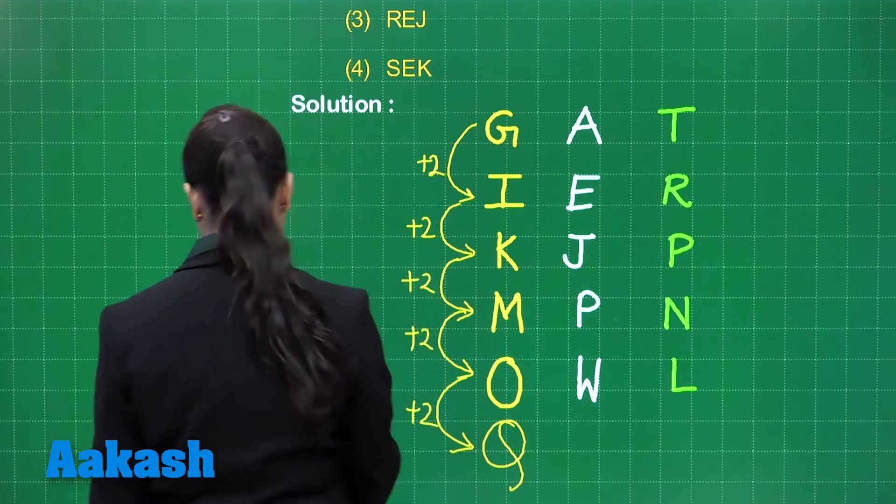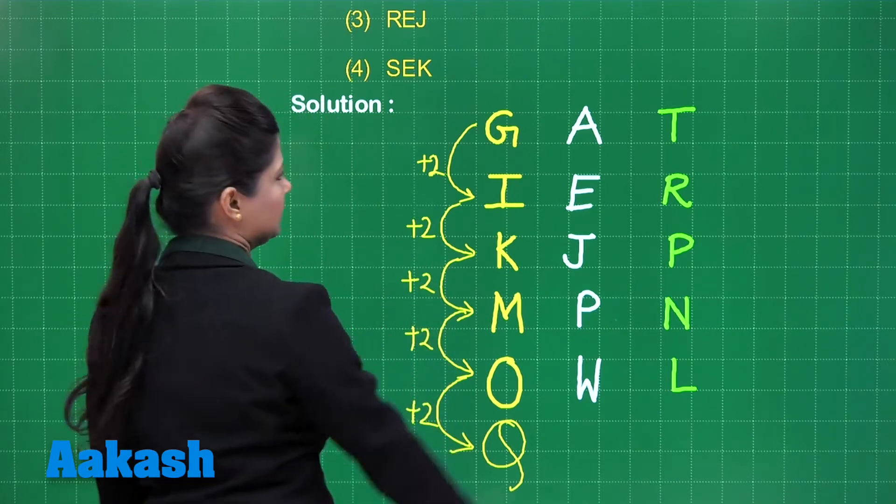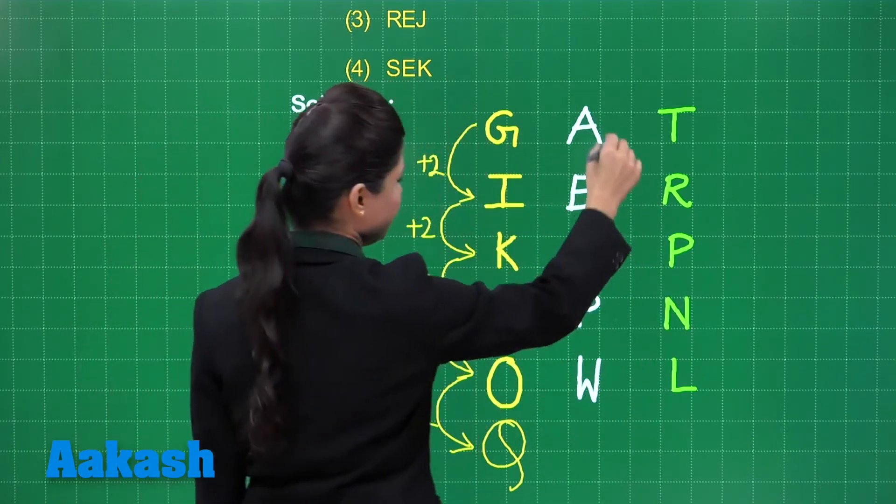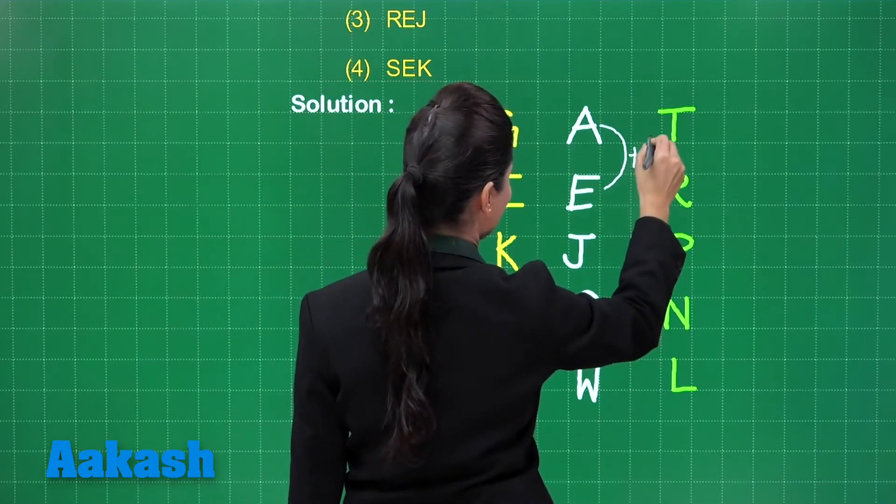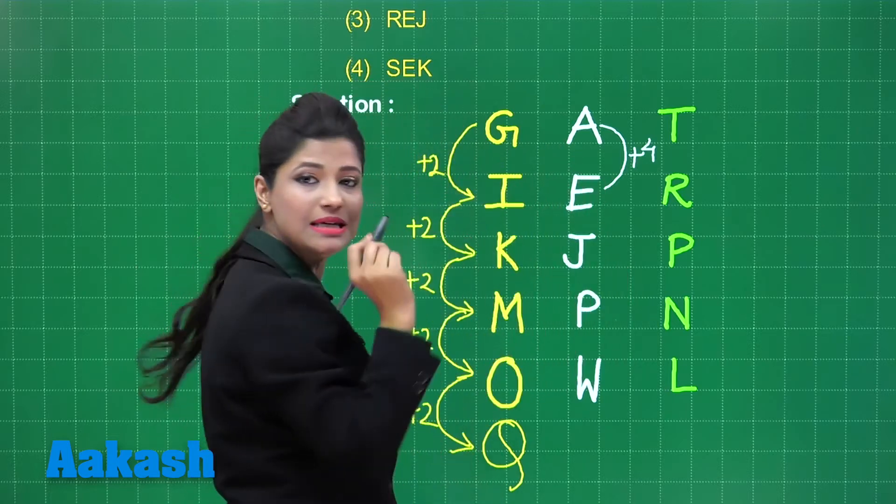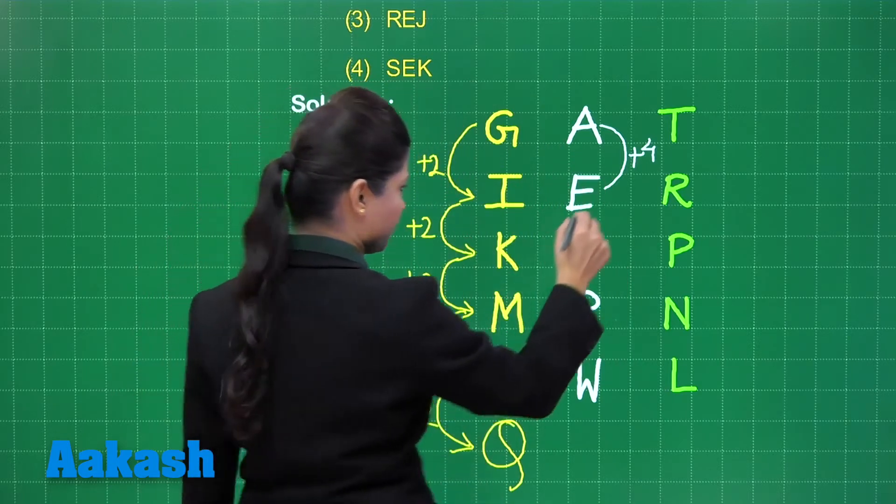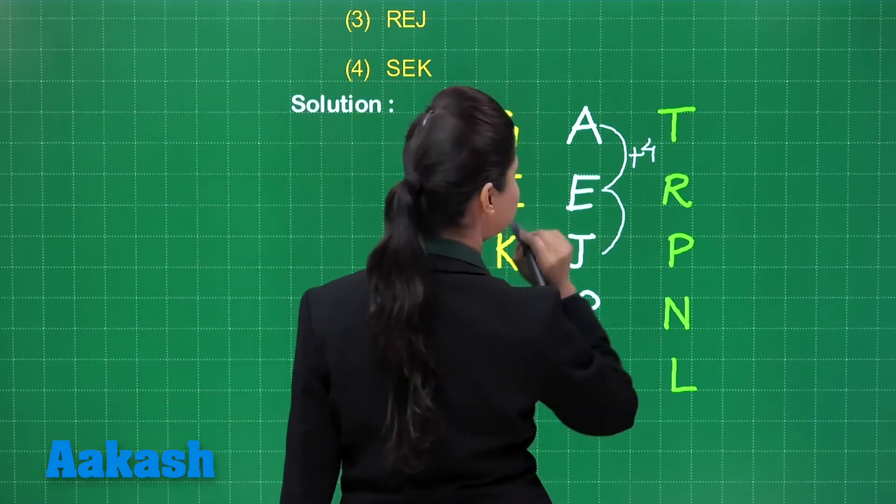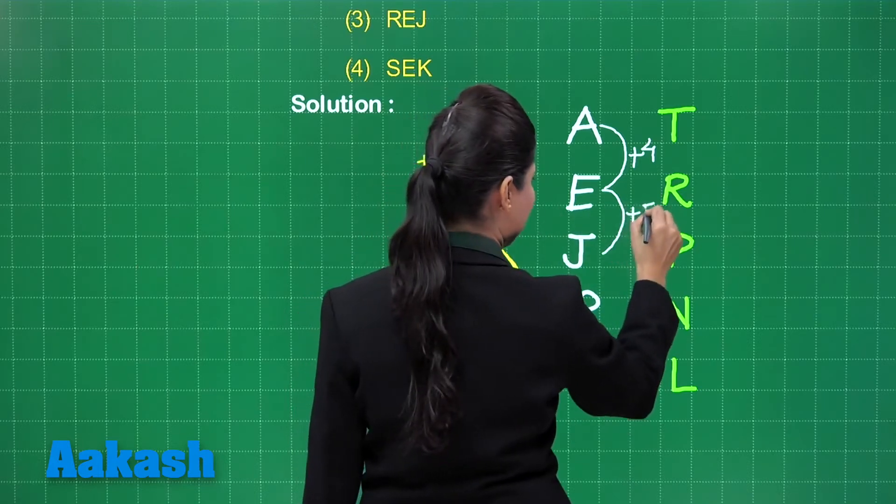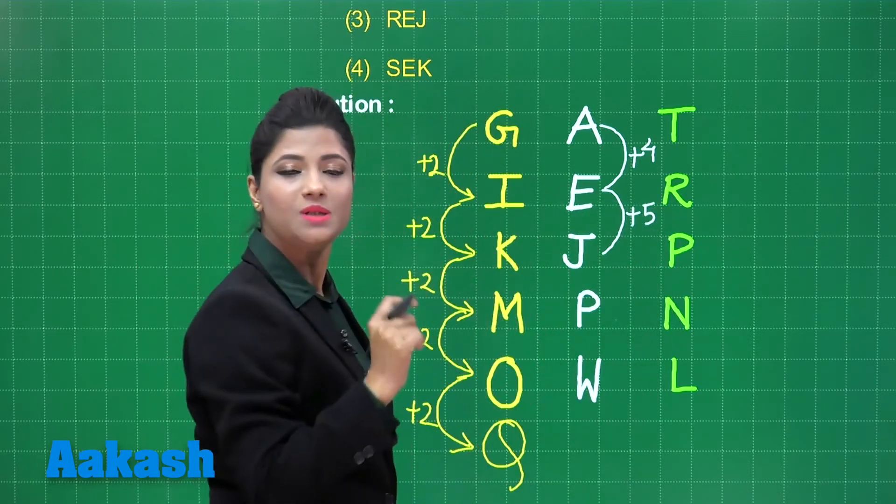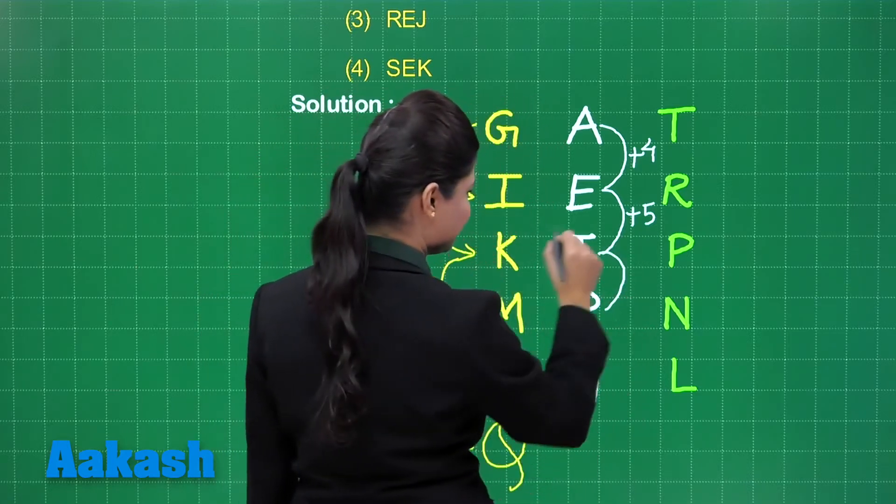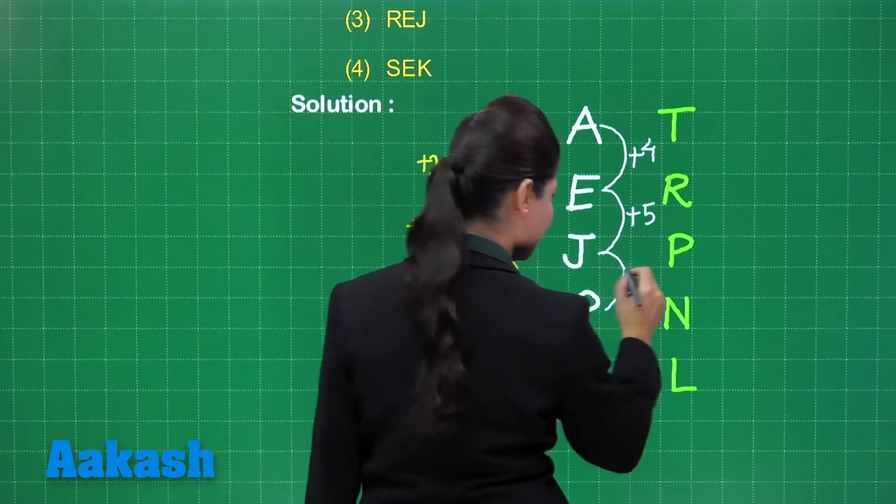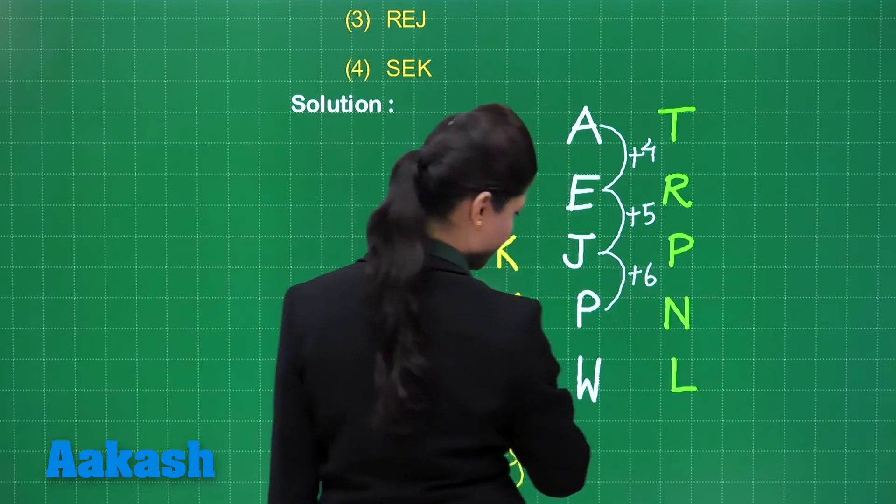Next, coming to this one, A to E, you have to move four alphabet positions. That is four alphabet positions A, B, C, D and E. From E to J, you have to move five alphabet positions. That is E, F, G, H, I, J. Then from J to P, this is at tenth position, this is at sixteenth position. You have to move six alphabet positions.